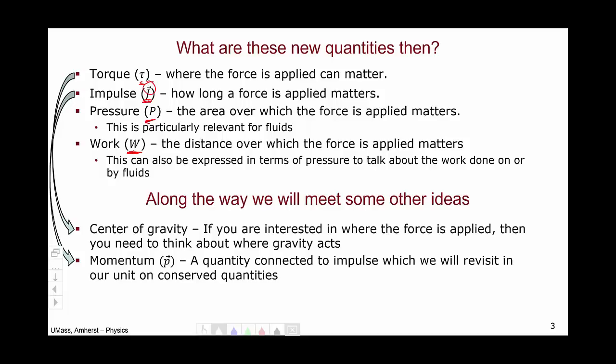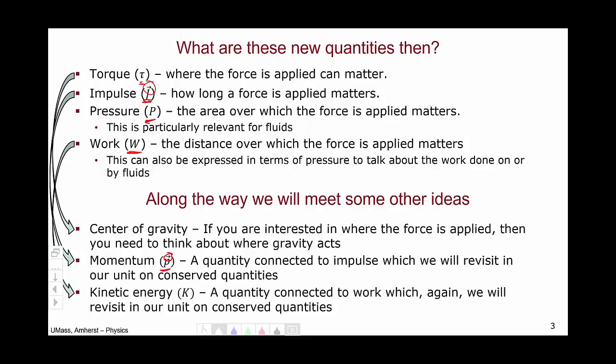When we discuss impulse, we will introduce the quantity momentum, which uses a lowercase p and you can see is also a vector. Momentum is a quantity connected to impulse, which we will revisit in greater detail in our unit on conserved quantities. The final quantity we will introduce in this unit is the quantity of kinetic energy, represented by a capital K. Kinetic energy is connected to work, and again, we will revisit this quantity in our unit on conserved quantities.